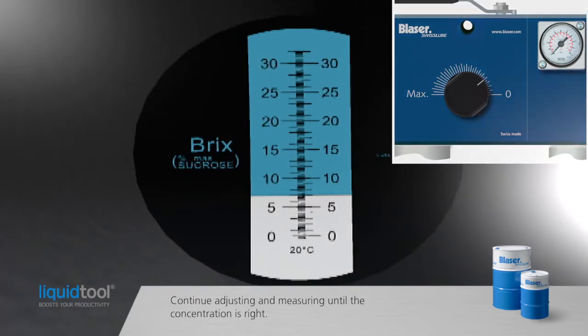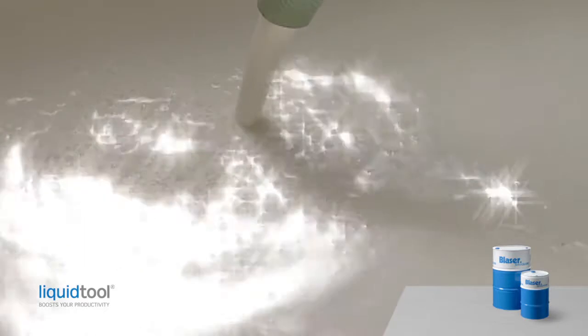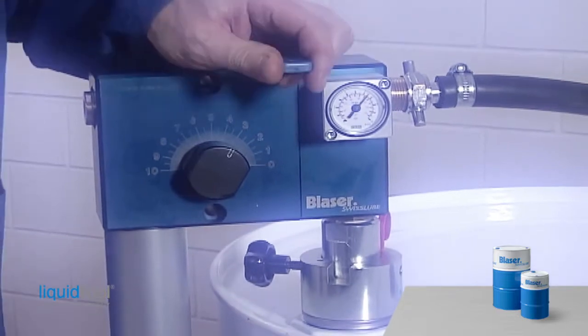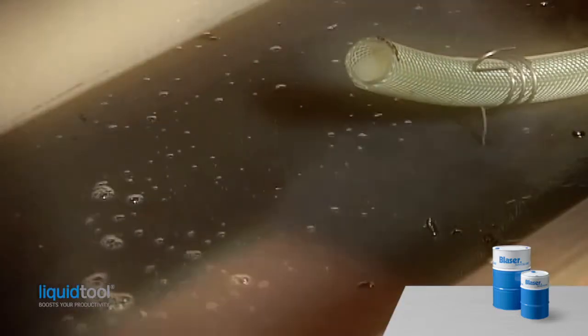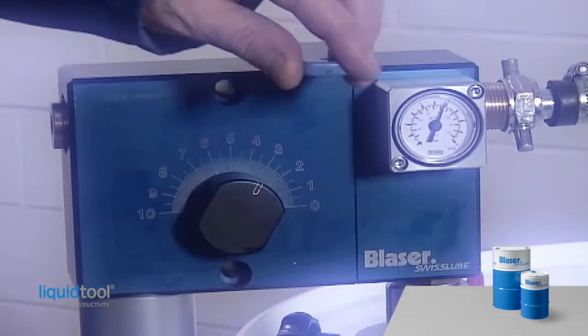If it is not correct, continue adjusting and measuring until the concentration is right. Now you can fill the machine with finely dispersed emulsion in the correct concentration. Before shutting down the jet mix, close the tap first, then close the water feed pipe valve.